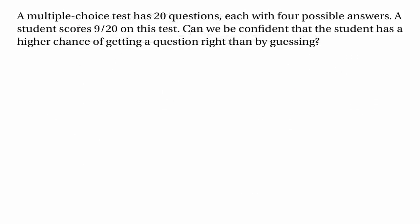Suppose that we have a multiple choice test with 20 questions and each question has four possible answers. Let's imagine that a student scores 9 out of 20 on this test. Is it possible that the student was just guessing, or can we be confident that the student has a higher chance of getting a question right than simply picking an answer at random?